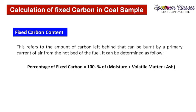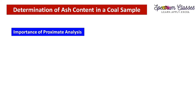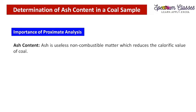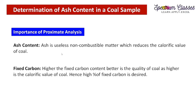These are the four different parameters which we can determine by the proximate analysis of the coal sample. Ash is the useless non-combustible matter which reduces the calorific value of the coal — so a lesser percentage of ash means a better fuel value. For fixed carbon, a higher fixed carbon content means better quality coal and higher calorific value, so a high percentage of fixed carbon is desired.